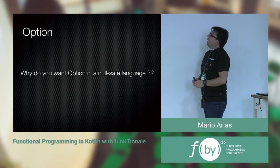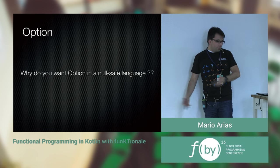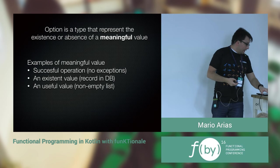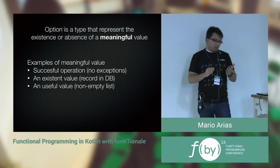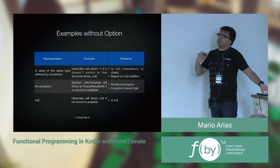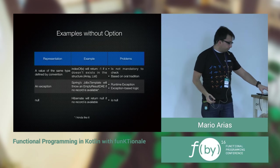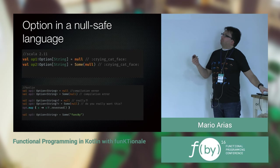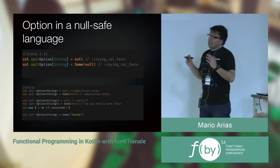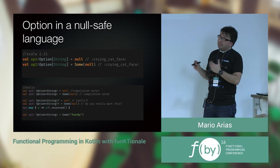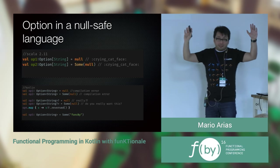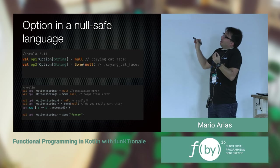Now we have Option. But why Option if the language is already null-safe? Because Option is more than just null safety — it does more than that. Option is the representation of presence or absence of a value. We have examples of this in JVM languages: returning -1, returning null, or throwing an exception. Because Kotlin is null-safe, there's a safer way, but let me show you an issue — in Scala 2.11, you could have an Option that is actually null.